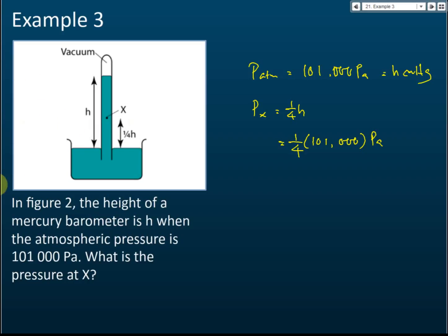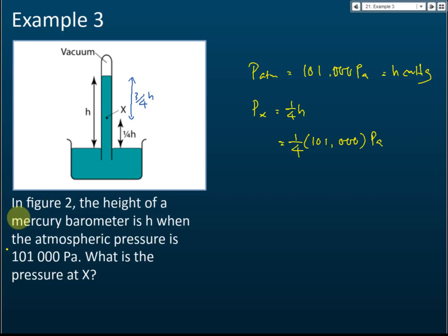The pressure at x must be measured from the top, which is three-quarters h. Remember: pressure is not measured from the bottom; pressure is measured from the top level of the mercury. So it's three-quarters h. A lot of students are tricked by these questions — the pressure is not one-quarter h, it's three-quarters h.